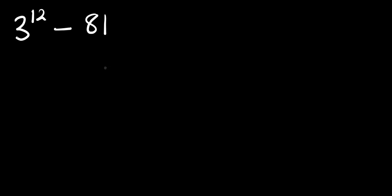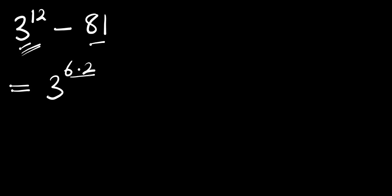Hello, you are welcome. How to evaluate 3 raised to the power of 12 minus 81 without making use of a calculator. We will rewrite 3 raised to the power of 12 as 3 raised to the power of 6 times 2 — remember 6 times 2 is 12 — then we have minus 81, which we can rewrite as 9 raised to the power of 2.